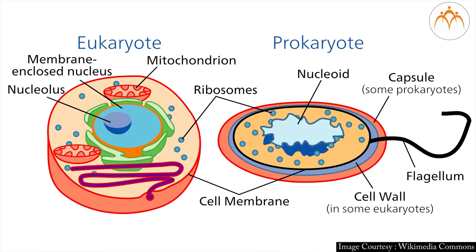Now, let us focus on functional aspects of types of cells. All the life processes and activities like obtaining nutrition, growth, response to environment, reproduction, etc. that are performed by eukaryotic cells are also accomplished by prokaryotic cells, albeit in a different manner.